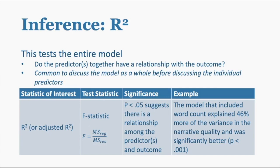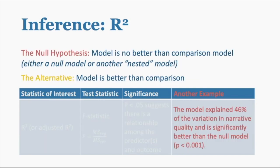R-squared provides an F statistic which gives you a P-value, and you interpret it using the R-squared value — how much of the variance did the predictors explain? The null hypothesis is that the model is no better than the comparison model, either a null model or another nested model. The alternative is that the model is better than the comparison. So the model explained 46% of the variation in narrative quality, significantly better than the null model.